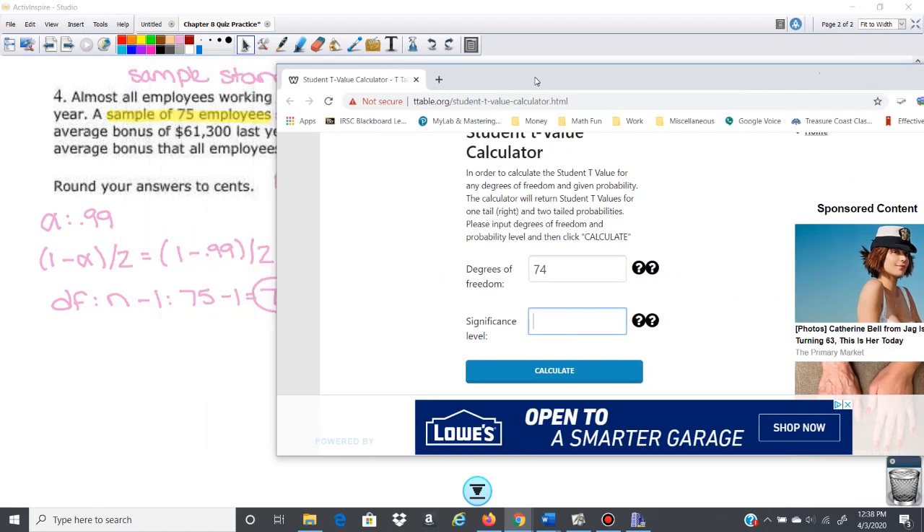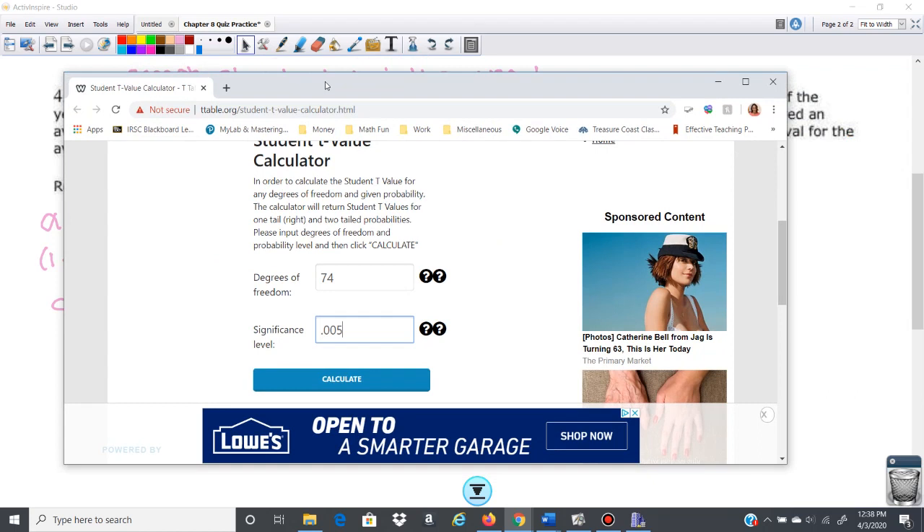It's just ttable.org and then you can put T value calculator in Google and it will come right up. So you can just put that in here. Your degrees of freedom is 74 and we have a significance level 0.005. Then hit calculate. And here's what you're going to get. This is one tail because we already divided by two. So we're using 2.6439. That's going to be our T value.